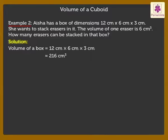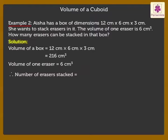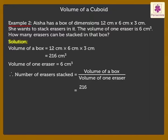It is given that the volume of one eraser is equal to 6 cubic centimeters. Therefore, number of erasers stacked is equal to volume of the box divided by the volume of one eraser, which is equal to 216 divided by 6, which is equal to 36.